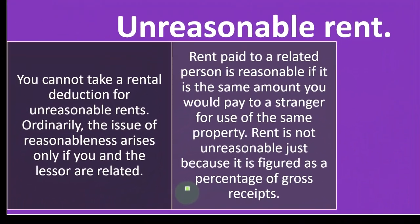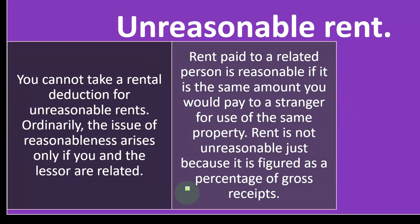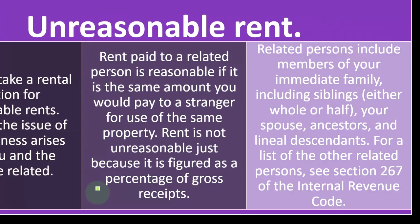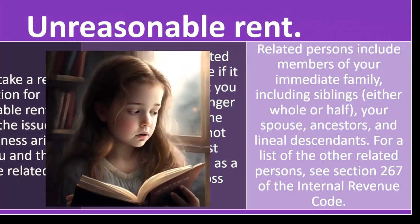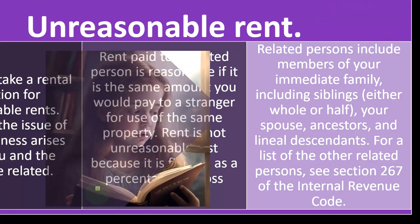Rent paid to a related person is reasonable if it is the same amount you would pay to a stranger for use of the same property. Rent is not unreasonable just because it is figured as a percentage of gross receipts. Related persons include members of your immediate family — including siblings (whole or half), your spouse, ancestors, and lineal descendants. For other related persons, see Section 267 of the Internal Revenue Code.